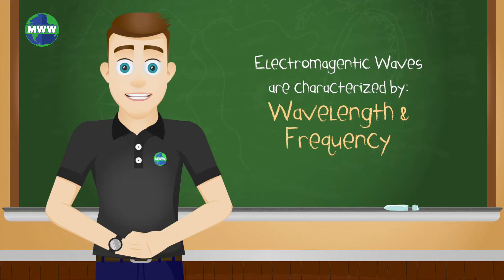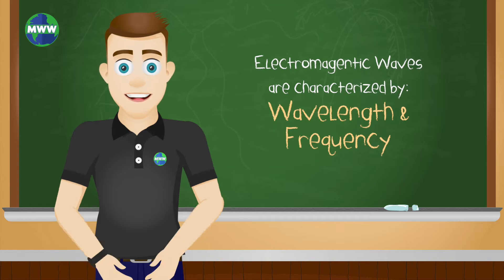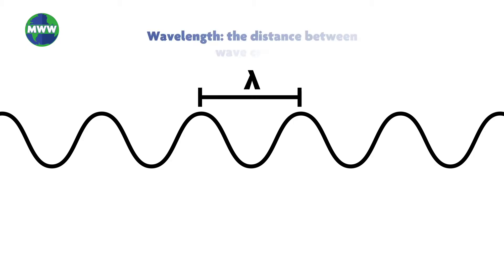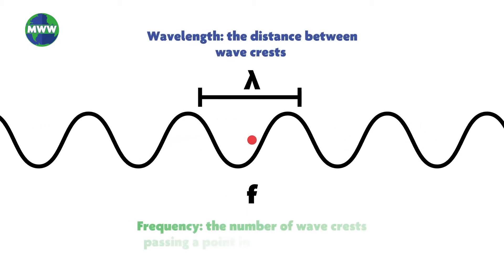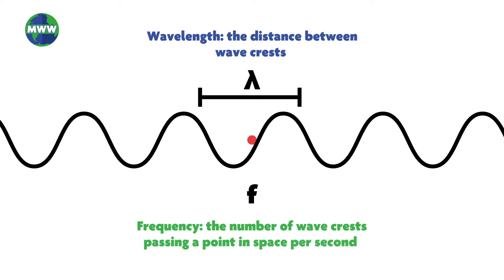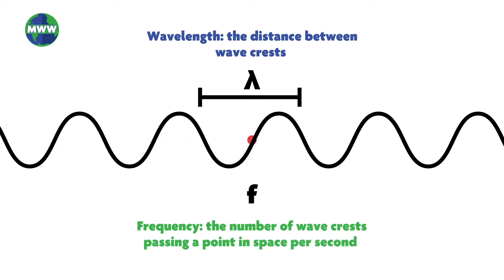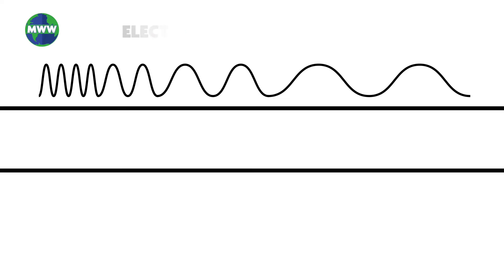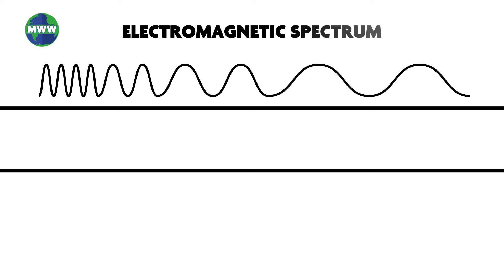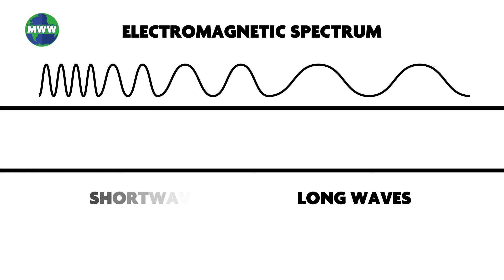We characterize electromagnetic waves by their wavelength and frequency. Wavelength is the distance between wave crests, and frequency is the number of wave crests passing a point in space per second. Therefore, the full range of possible wavelengths of light forms the electromagnetic spectrum. Some wavelengths are very long and others are short.